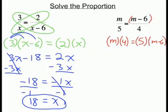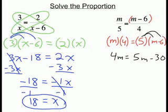First we have m times 4, and then we have 5 times the quantity m minus 6. On the right side we must distribute the 5 to both the m and the 6. So 4m equals 5m minus 30.